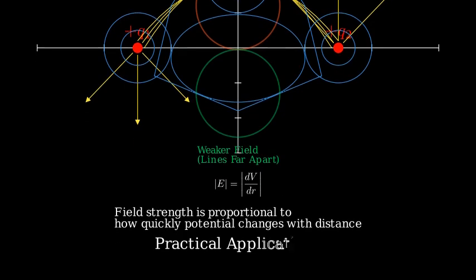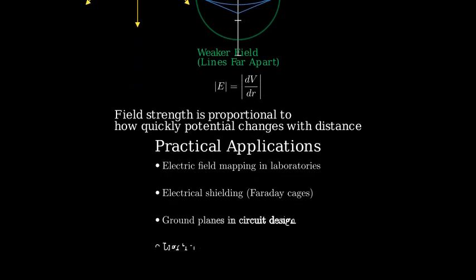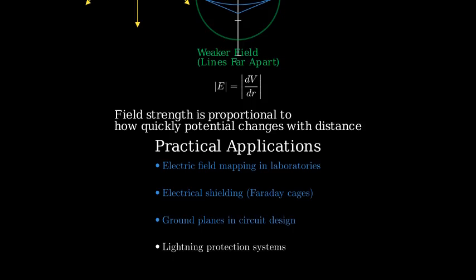Equipotential surfaces have many practical applications. In laboratories, we can map electric fields by measuring equipotential surfaces. In electrical shielding, Faraday cages work because their conducting surfaces are equipotential. In electronic circuit design, ground planes provide equipotential references.